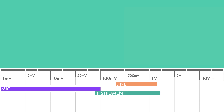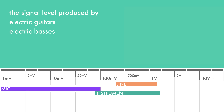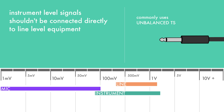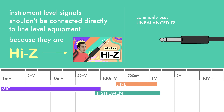In between mic and line level is instrument level. This is the signal level produced by electric guitars and basses, and by a lot of vintage keyboards and synths. Instrument level is typically weaker than line level, although some instruments are capable of producing strong enough signals that don't need amplification to reach line level. Still, they shouldn't be connected directly to line level equipment due to them having a high impedance. If you want to know more about impedance and how to plug in your instruments correctly, go watch our Hi-Z video.